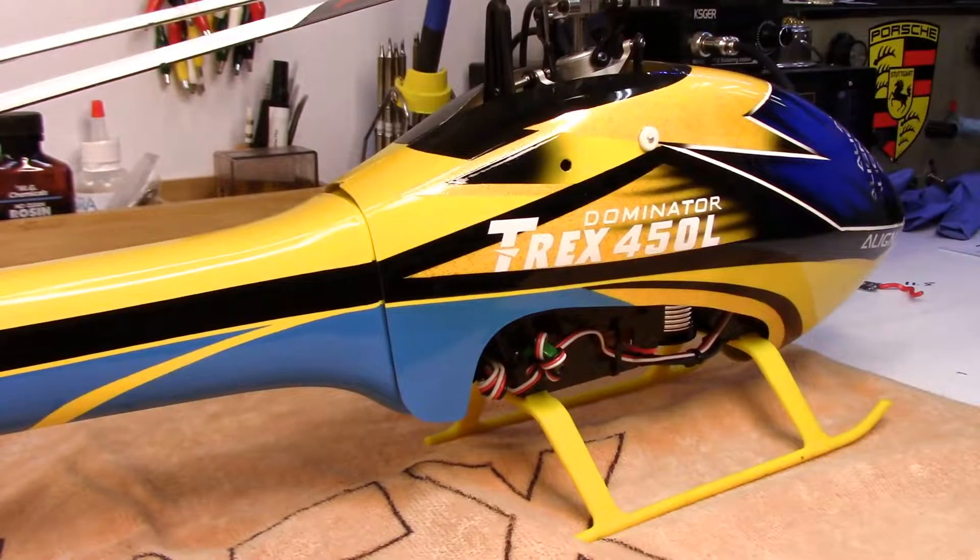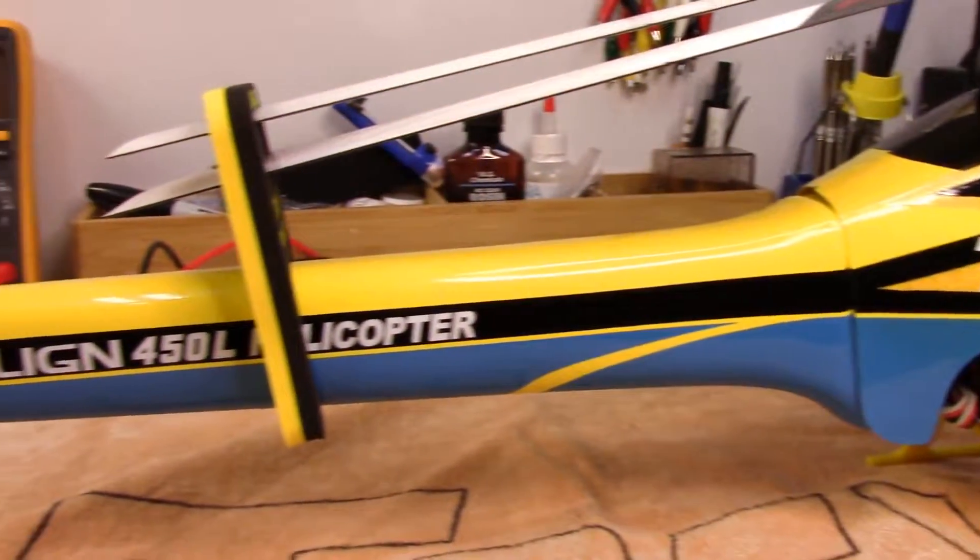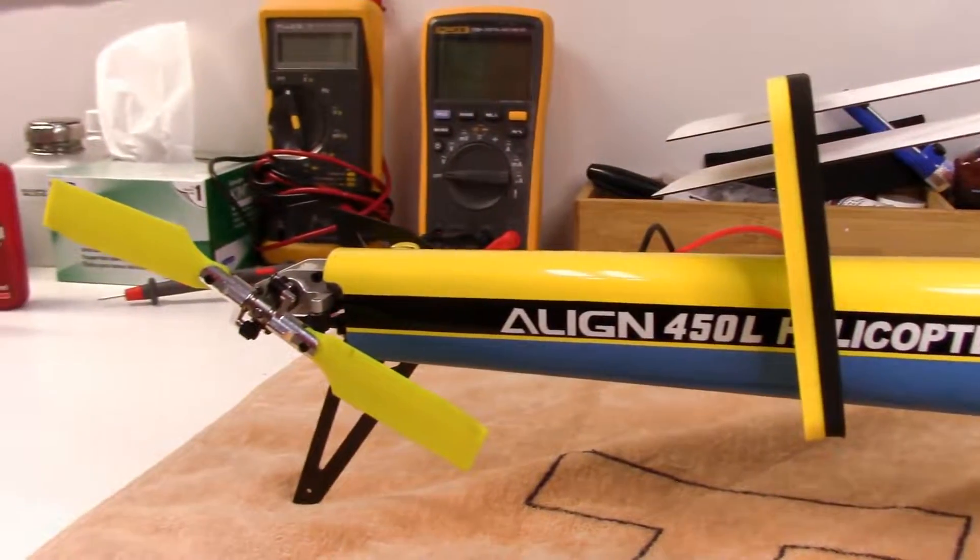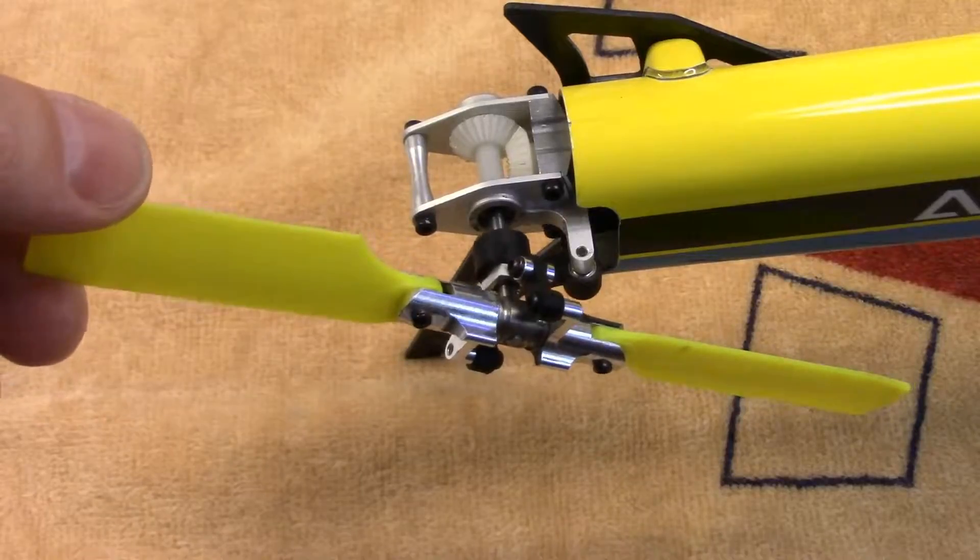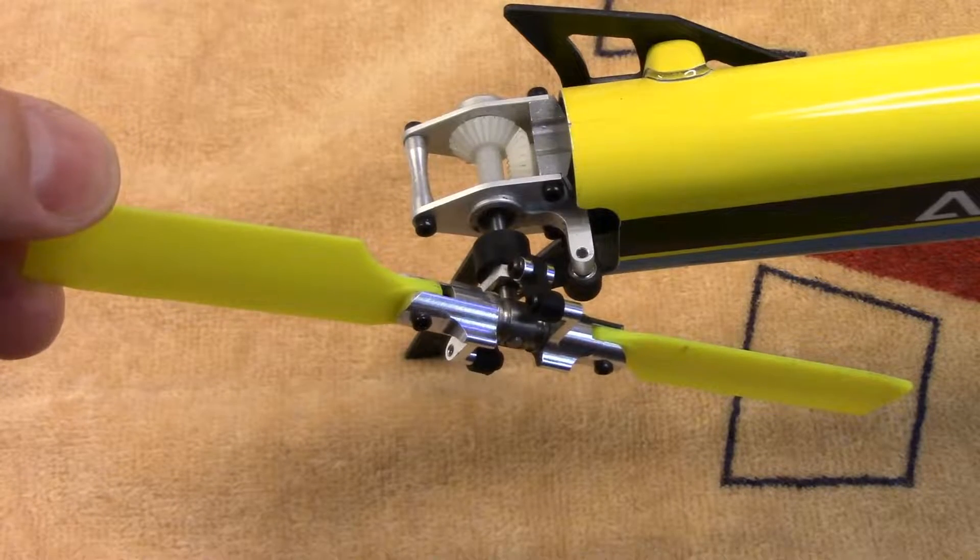Howdy folks, doing a little bit of service today on this 450. Last time I was flying it, I noticed the tail was hunting a little bit. There's a little slop in here and that's what's causing the hunting.